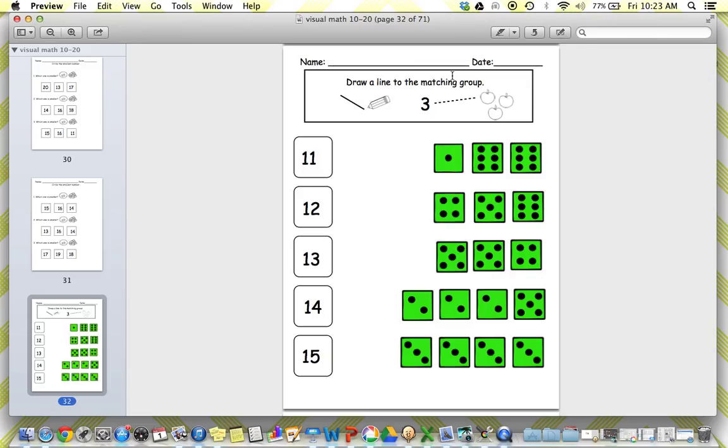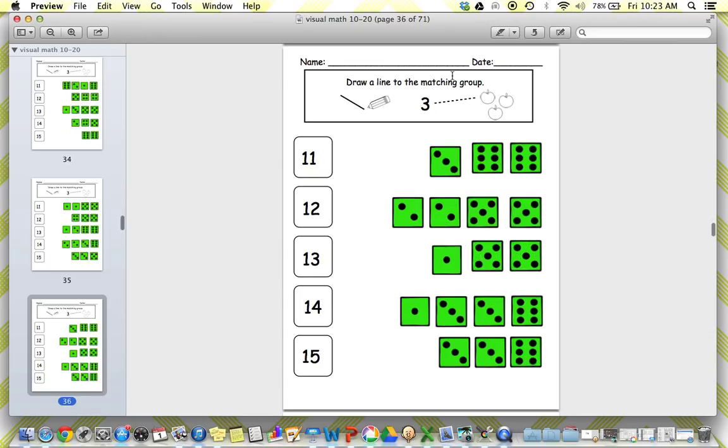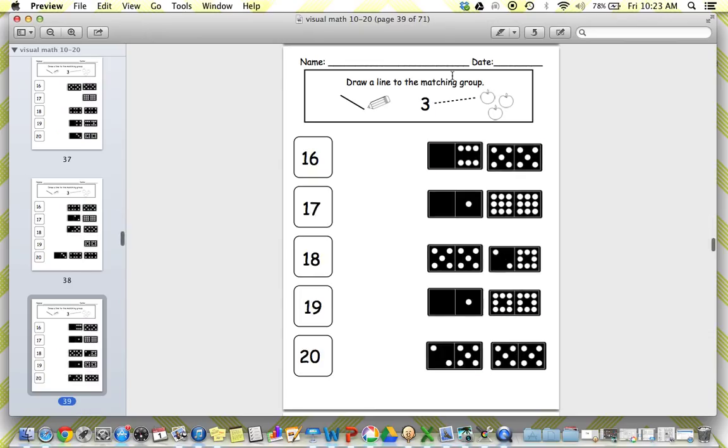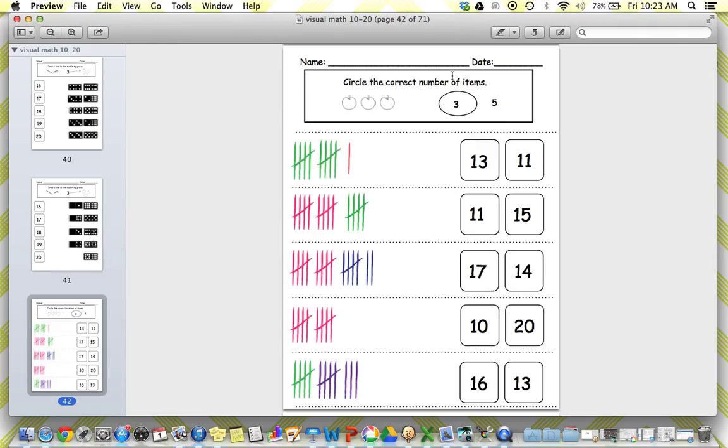Next, we have matching. So these are with dice, which again, you're going to have to really pay attention here. And that's the point. The point is to challenge and to really expand on those skills that we taught in visual math number one. So matching first 10 to 15 and then 16 to 20 with dominoes. So really counting those little numbers and attending.